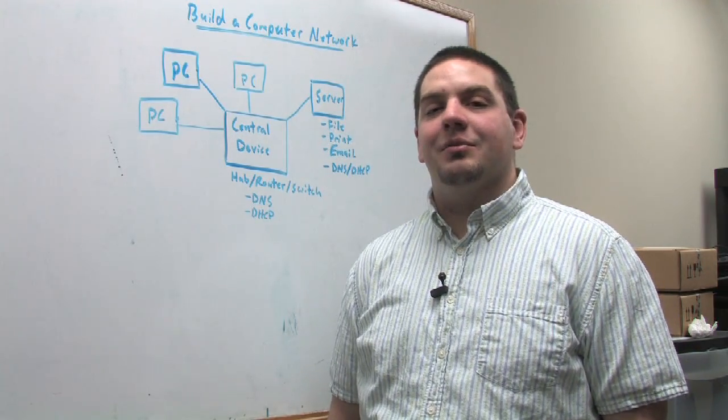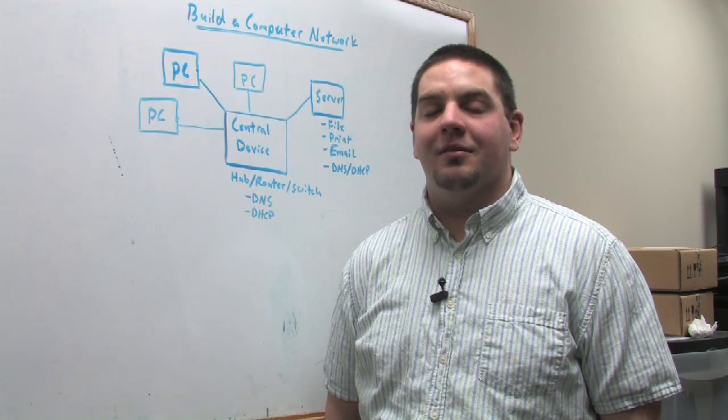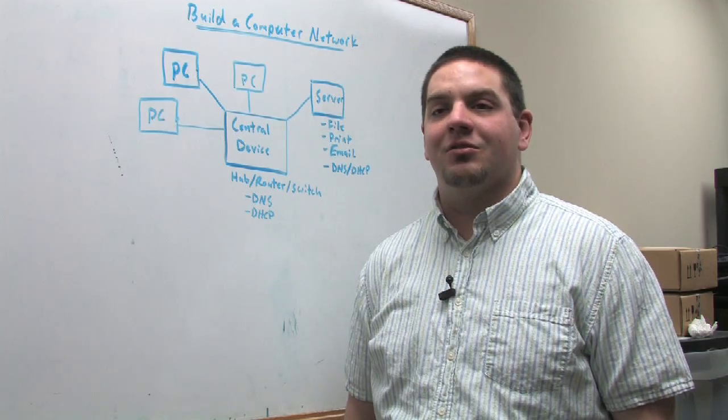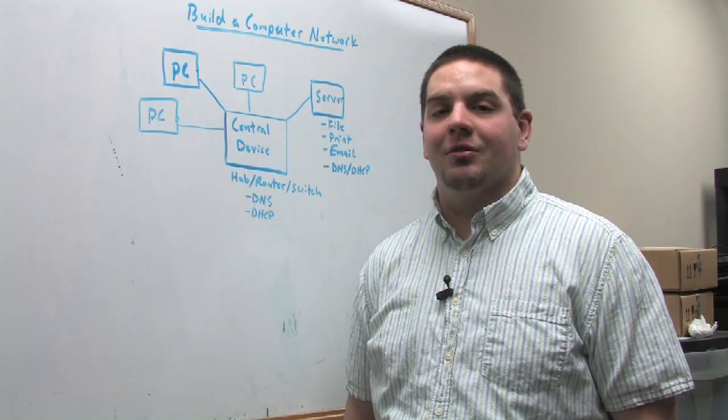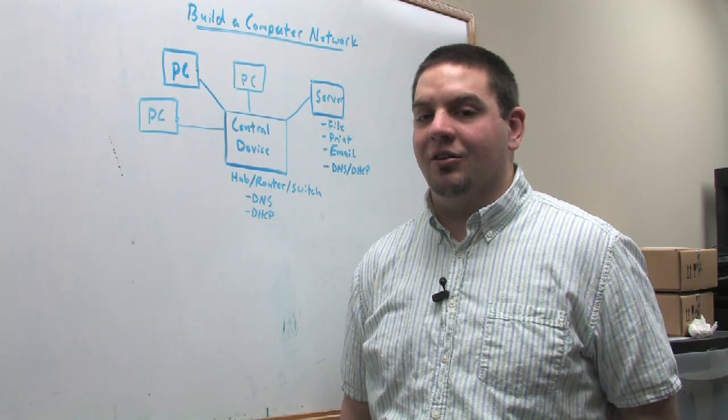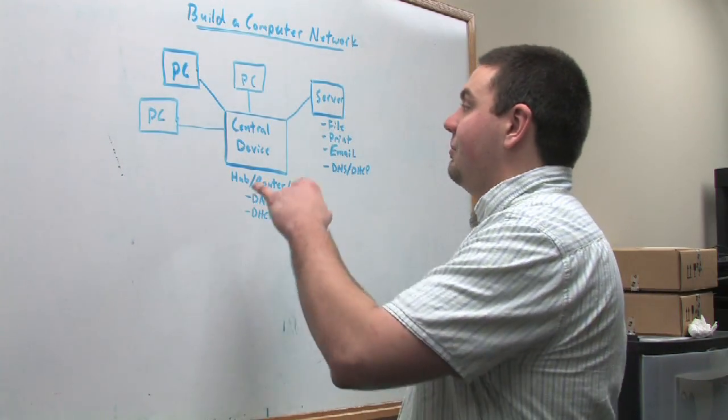Hello. We are talking today about how to build a computer network system. A computer network system is, in its most simple form, very basic. You typically only really need three components.